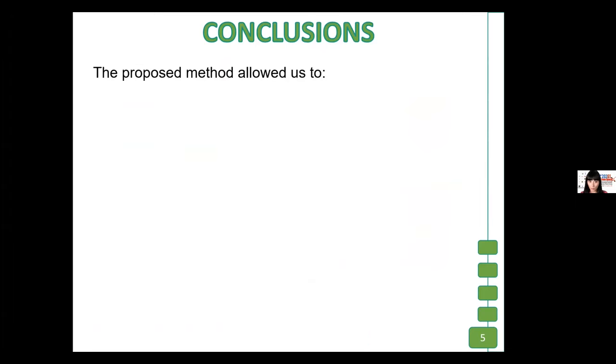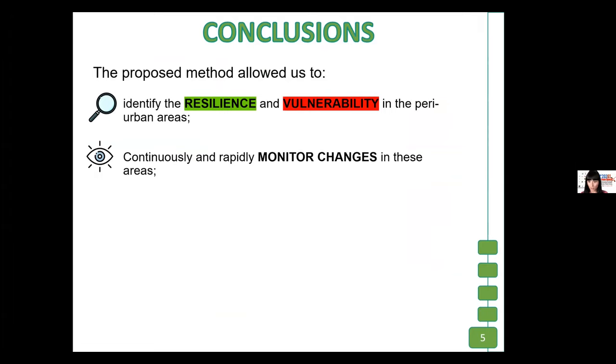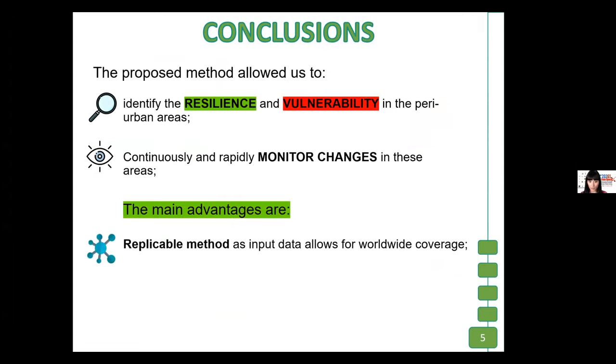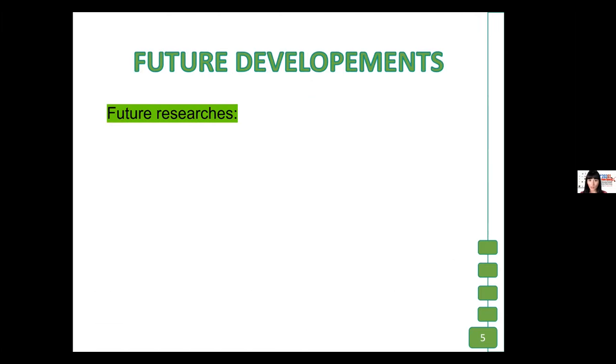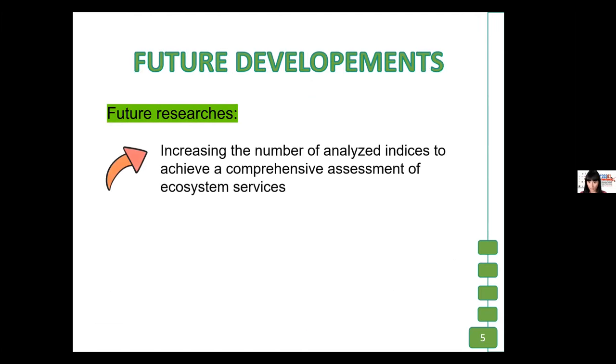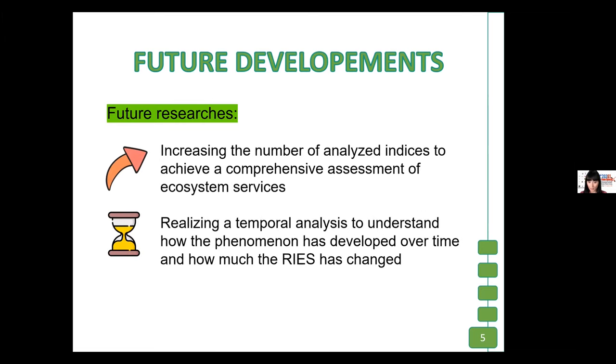In conclusion, the proposed method allowed us to identify the resilience and vulnerability in the peri-urban areas, and monitor the changes in these areas. The main advantages are that the method is replicable, and the resilient index ecosystem services are a very useful tool for urban and landscape planners. The future developments are increasing the number of analyzed indices and realizing a temporal analysis.